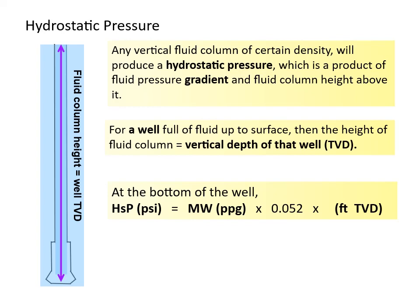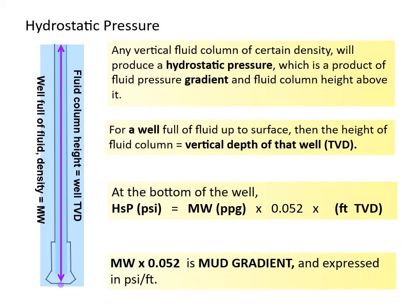At the bottom of the well, the hydrostatic pressure in psi is equal to mud weight in ppg multiplied by 0.052 multiplied by feet TVD. Mud weight multiplied by 0.052 is mud gradient, and is expressed in psi per feet.